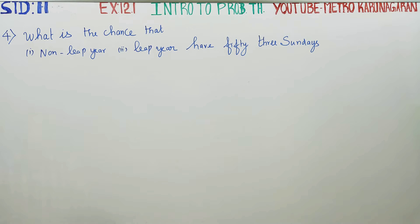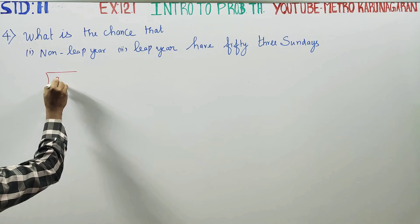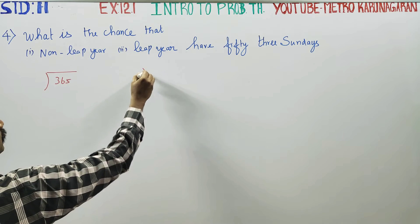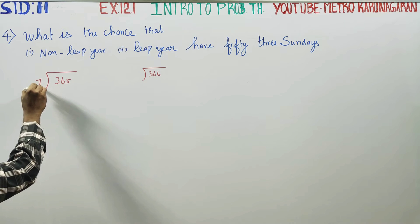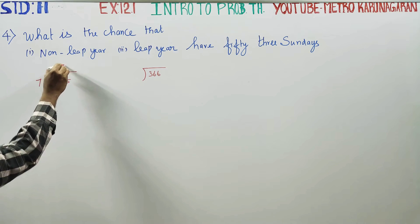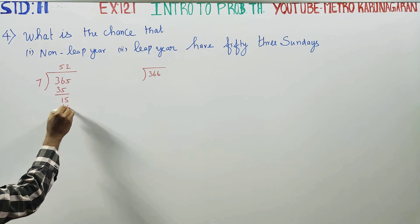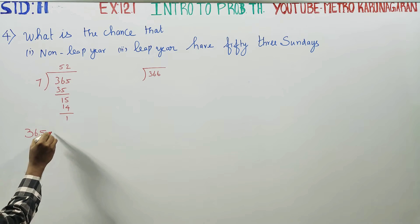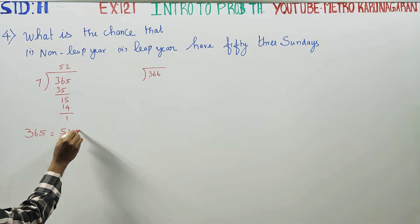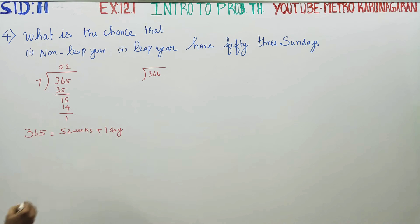For a non-leap year, you will be having 365 days. Converting to weeks: 7 times 52 is 364, balance is 1 day. So a non-leap year has 365 days, which contains 52 weeks plus 1 day extra.